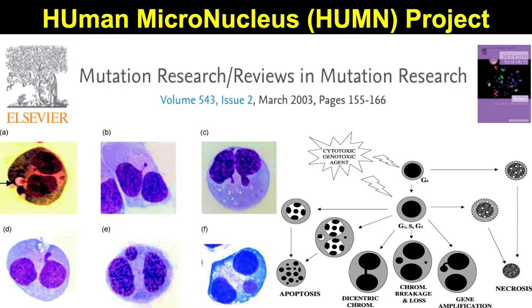When we mention micronuclei, we have to mention the Human MicroNucleus project — HUMN — a global project made by our EMGS members with many familiar faces shown here. It's a very productive team and so far they have published numerous papers. This group not only set up standards for how to identify and score micronuclei, they also laid out all the possible pathways and mechanisms for how micronuclei form.